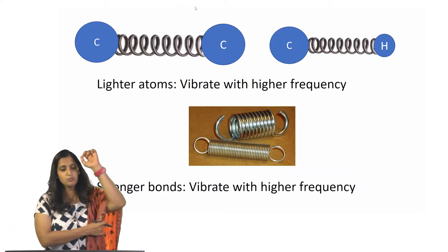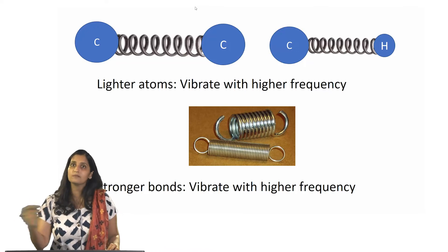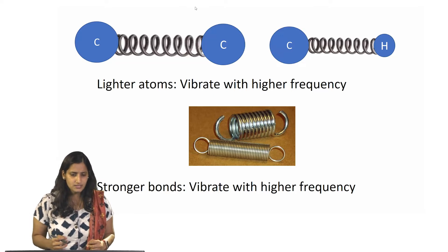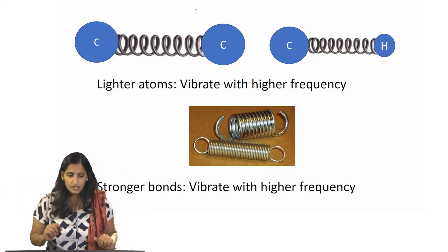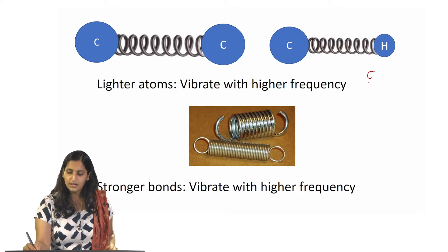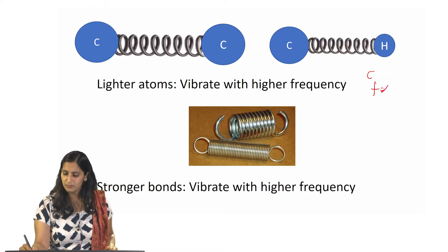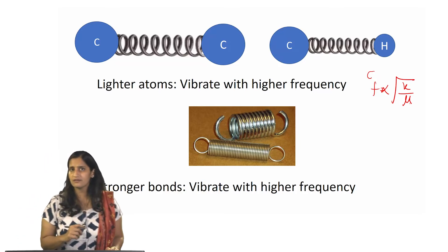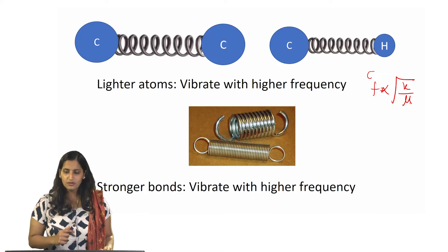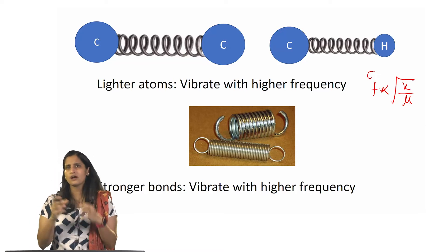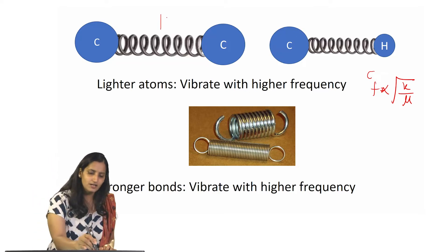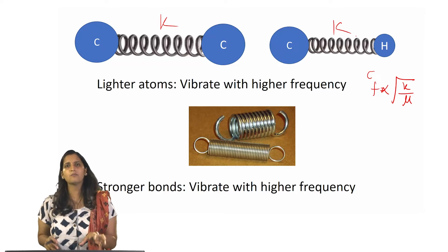Let us take two bonds: one is a carbon-carbon bond and one is a carbon-hydrogen bond. Let's say we shine light on both of these and they have started vibrating. We know that frequency f ∝ √(k/μ), so which one will vibrate with a higher frequency? To think about it, all single bonds have a very similar spring constant — so the k here is very similar to the k for a single covalent bond.